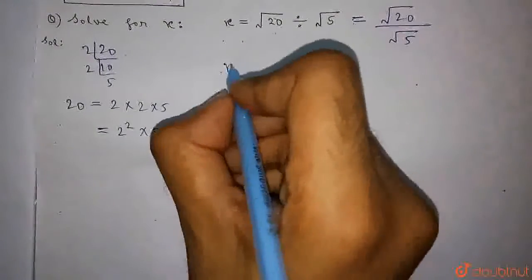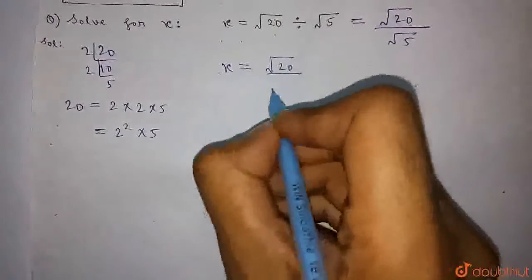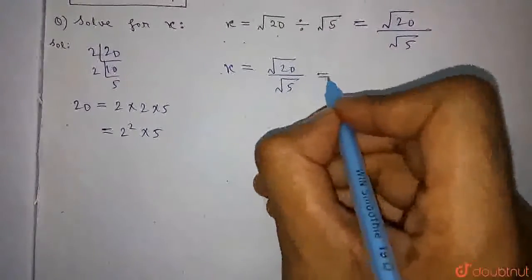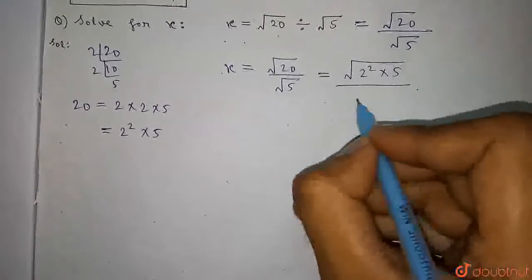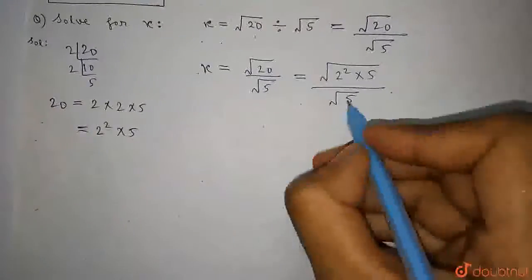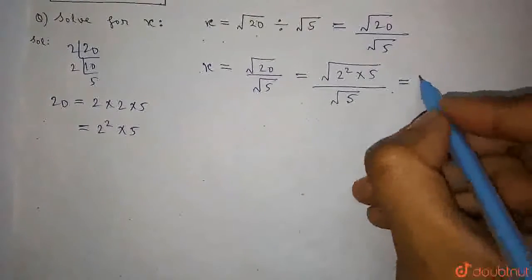So we can write x equals √20 the whole divided by √5. So we can write √20 as √(2² × 5), whole divided by √5. Now there is a squared term, so it will come outside the root.